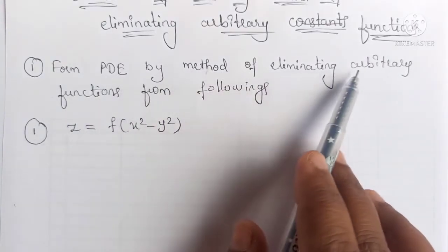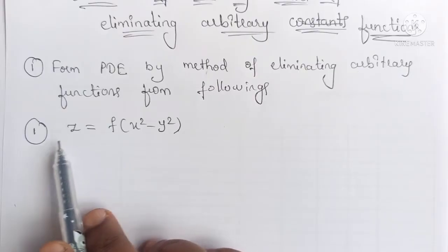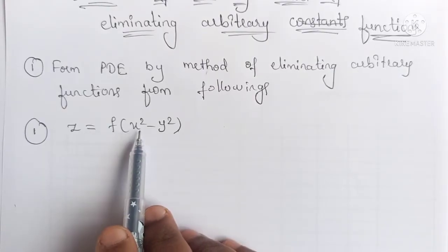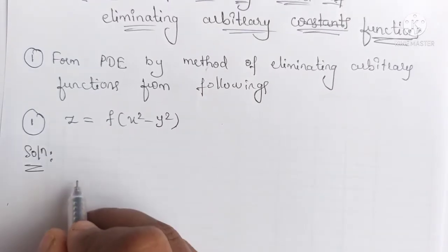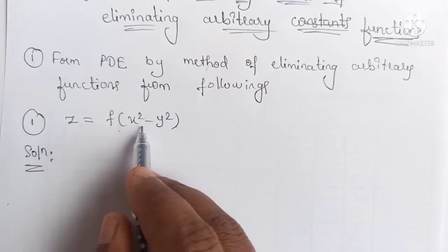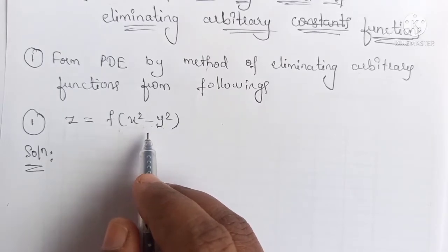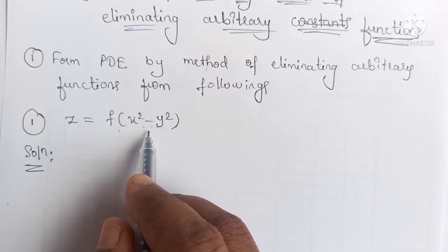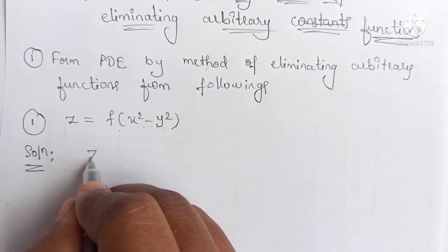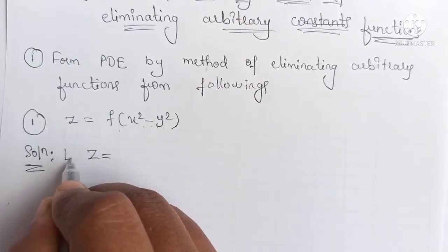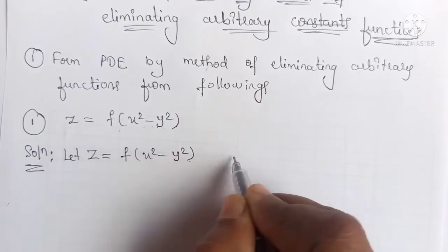Form PDE by the method of eliminating arbitrary functions from the following: the first one is z equals f of x squared minus y squared. We differentiate the given function with respect to x and y partially and separately. Let us label this as equation 1: z equals f of x squared minus y squared.